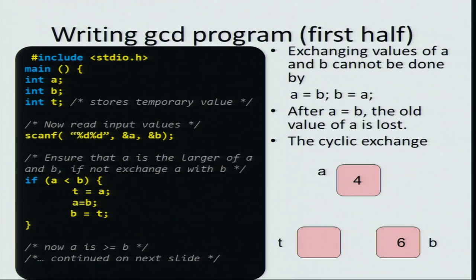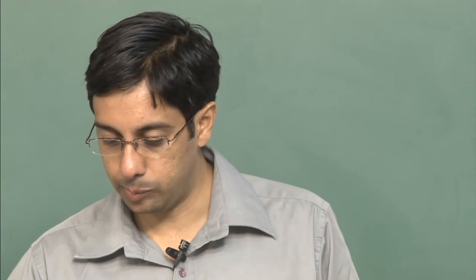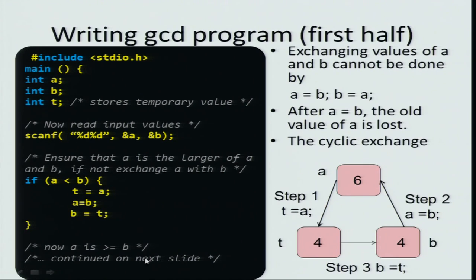We have two variables a and b that we need to swap. What we can do is use a third variable t. First, copy the value of a to t — now we have a backup. Then say a = b, so the value of b is copied to a; now a is 6 and b is 6, but we still have a memory of the old value of a stored in t. To complete the swap, copy the value of t to b using the assignment b = t. This idea is known as cyclic exchange.